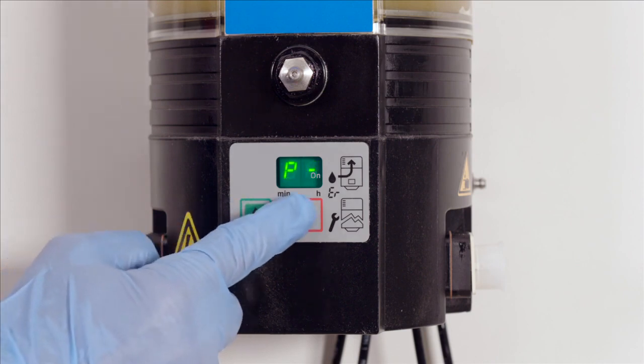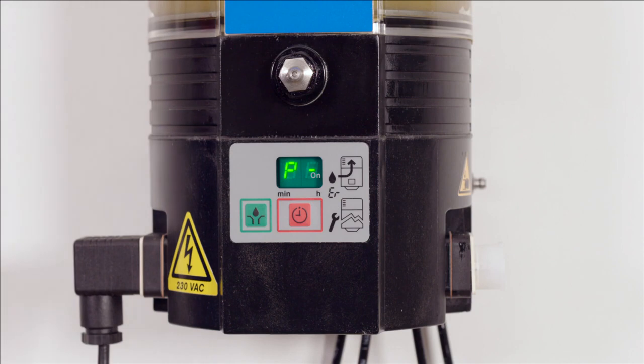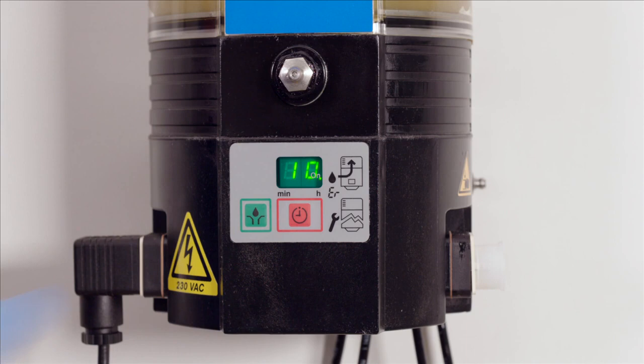The P message should now be displayed, indicating that the programming sequence has been completed. The new settings need to be confirmed by an additional press of the red key within 30 seconds. Otherwise, the new setting will be lost.